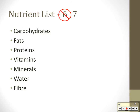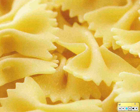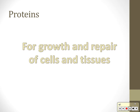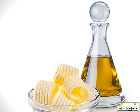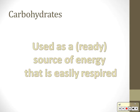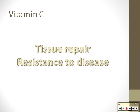Now we talk about our seven nutrients. Carbohydrates are used as a ready source of energy that's easily respired — we get them from pastas, rices, and breads. Proteins are used for growth and repair of tissues and cells, from meats and legumes. Fats are used as a long-term energy source and for protection of our organs, from butters and oils. Candies are high in sugar so they count as carbohydrates, not fat.